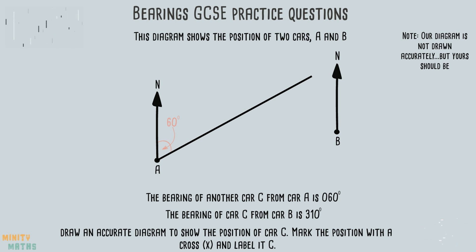Now we repeat this for the information given in the second sentence. Remember to measure the angle clockwise. So the point where these two lines meet is the exact position of car C. We can mark this on the diagram. In the exam, do not rub out your lines, as these will be used to show how you worked out the position and gain full marks.